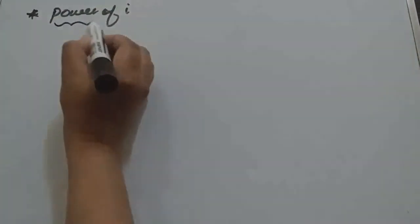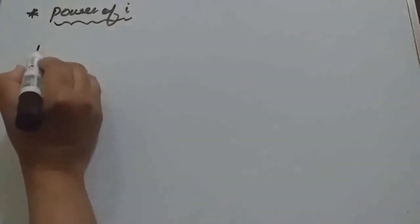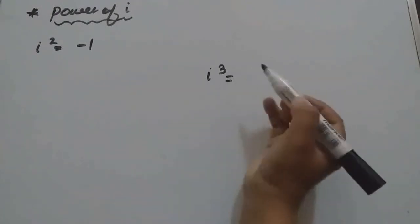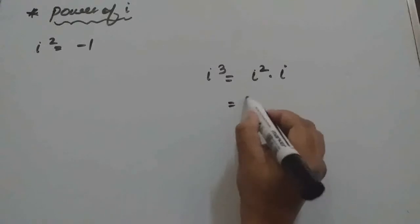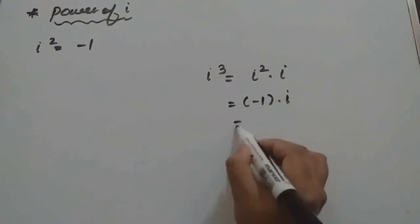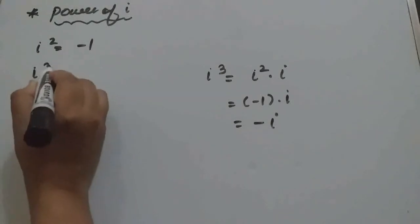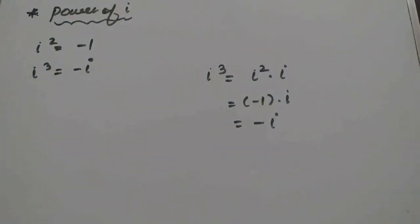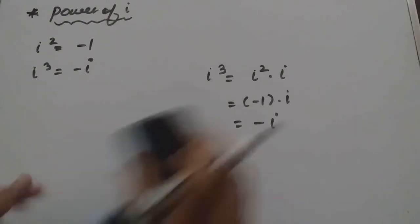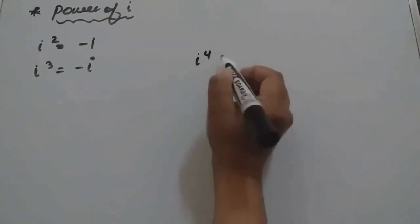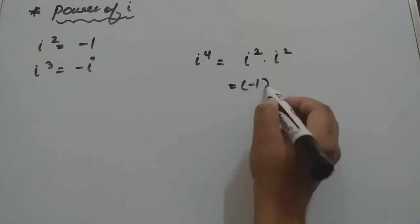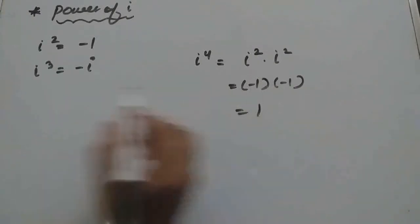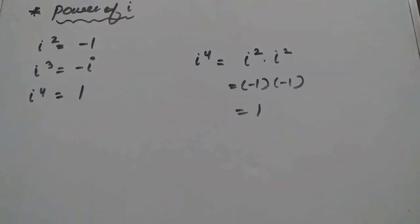Next is powers of i. We know i squared is minus 1. For i cubed, we write i squared times i, which is minus 1 times i, so i cubed equals minus i. For i to the power 4, we write i squared times i squared, which is minus 1 times minus 1, giving i to the power 4 equals 1.